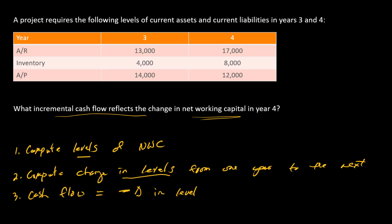Here are some numbers for year three and year four of the project. First, let's figure out what's an asset and what's a liability. Accounts receivable is a current asset. Inventory is also a current asset. Accounts payable is a liability. We're going to net these out — add up the assets and subtract the liabilities, one year at a time. Starting at year three: 13 and 4 is 17 thousand minus 14 thousand.